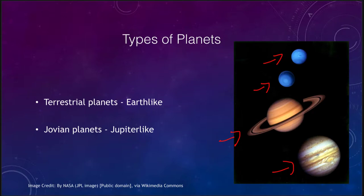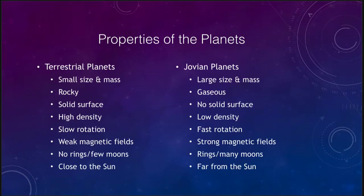Now if we want to look in a little more detail, we can look at a table here showing some of their properties and comparing these two different types of planets. What we see is that the terrestrial planets have one set of properties and the Jovian planets have a completely different set of properties.